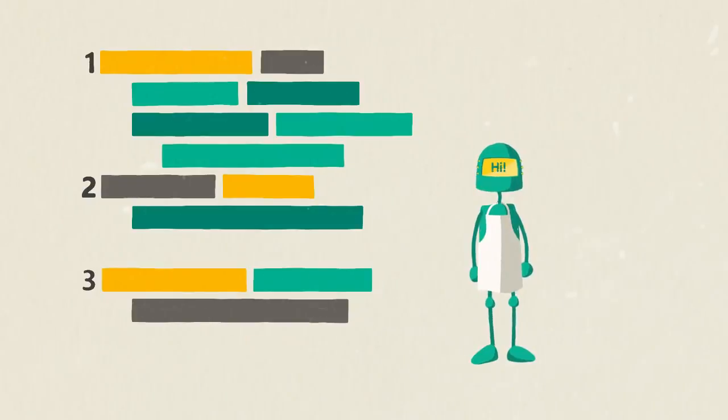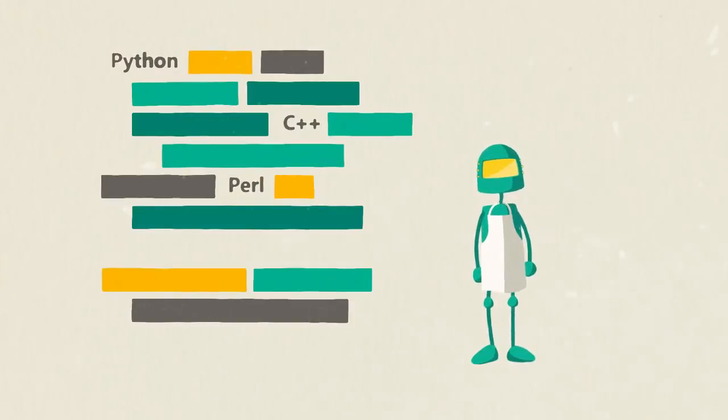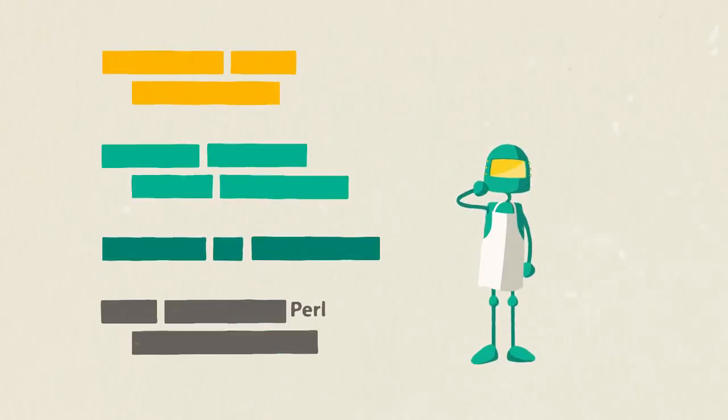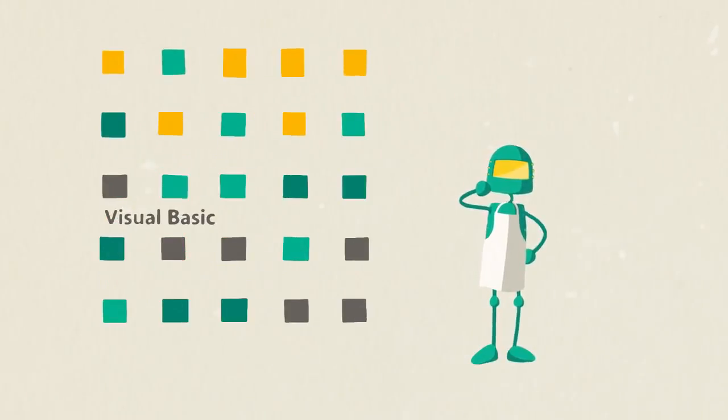And just like people in different parts of the world speak different languages, computers understand many different languages too, with names like Python, C++, Perl, and Visual Basic. They're all different in their own way, and similar to spoken languages, they share many of the same basic features.